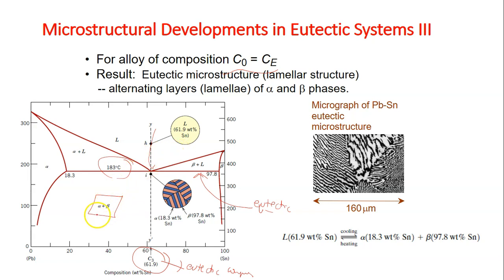The microstructure of the solid that results from this transformation consists of alternating layers. This is the inset of the microstructures. Sometimes we call this as lamella, alternating layers or lamella eutectic structure.